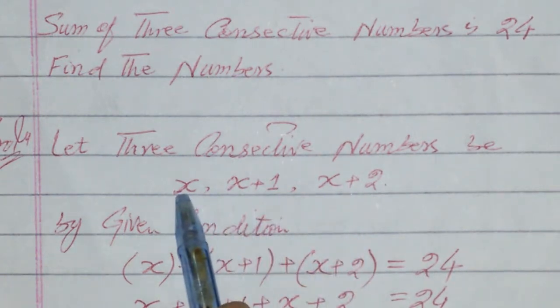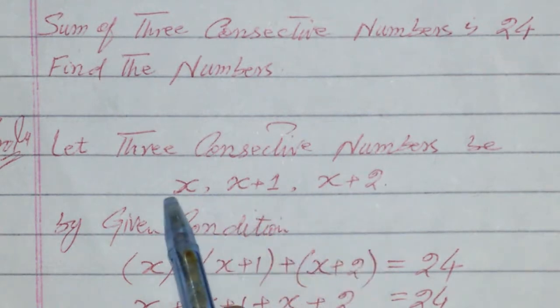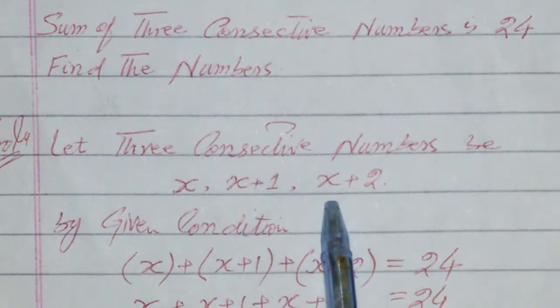Consider these numbers will be from the natural numbers or from the integers. They are x, the consecutive number x+1, the consecutive number, and x+2.